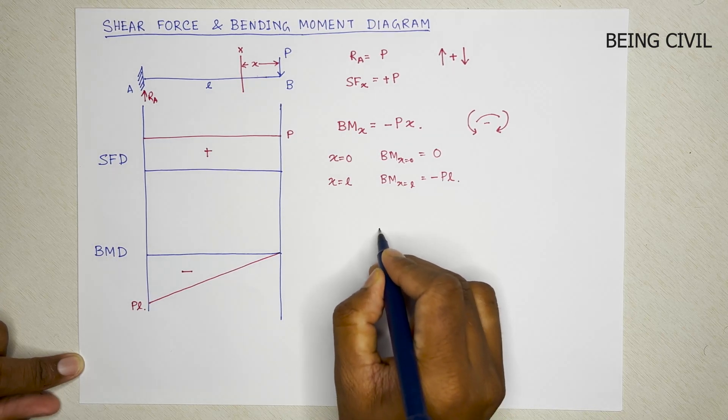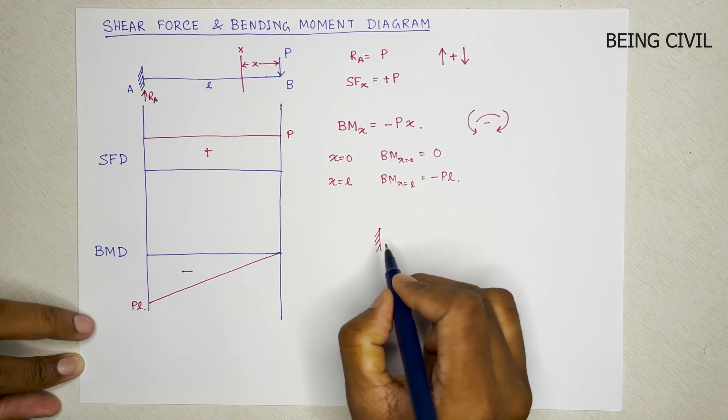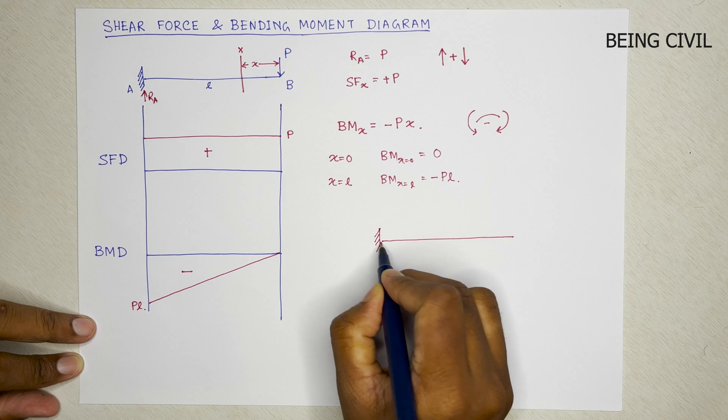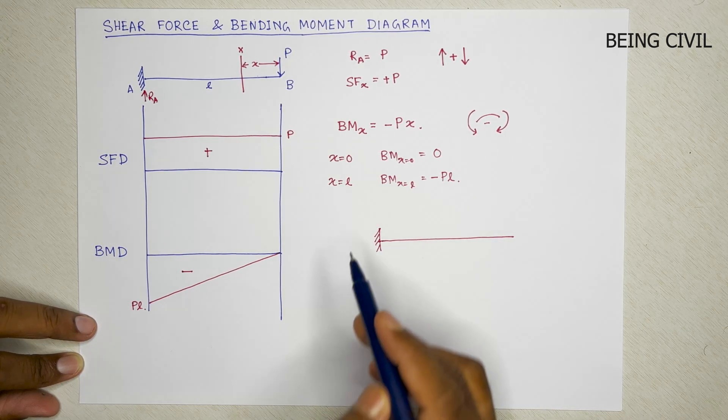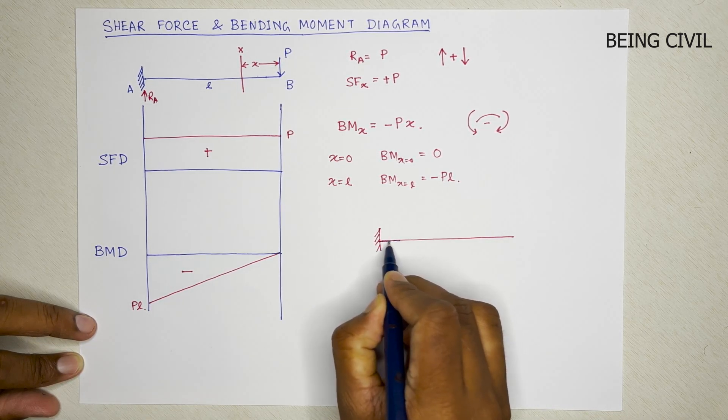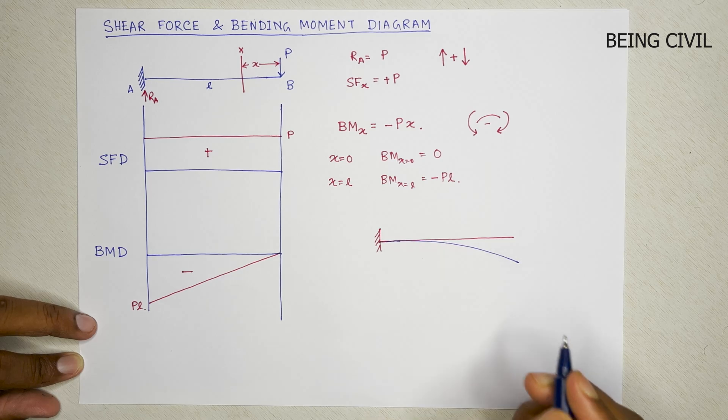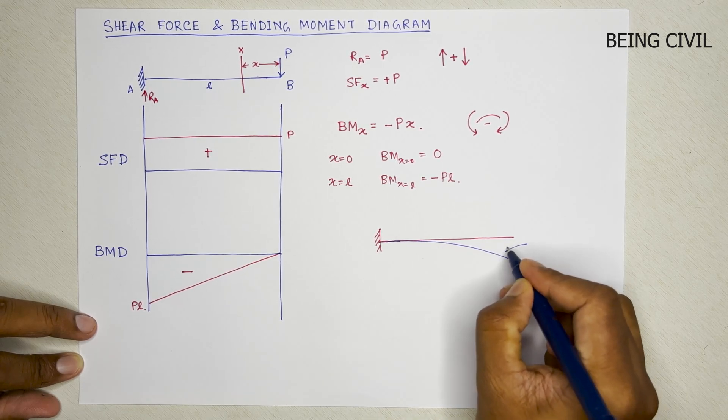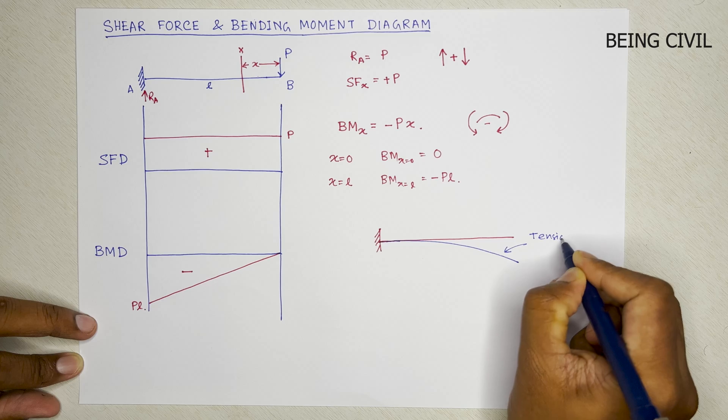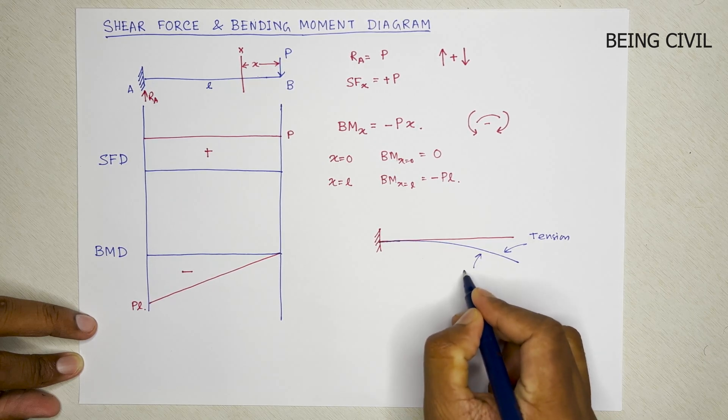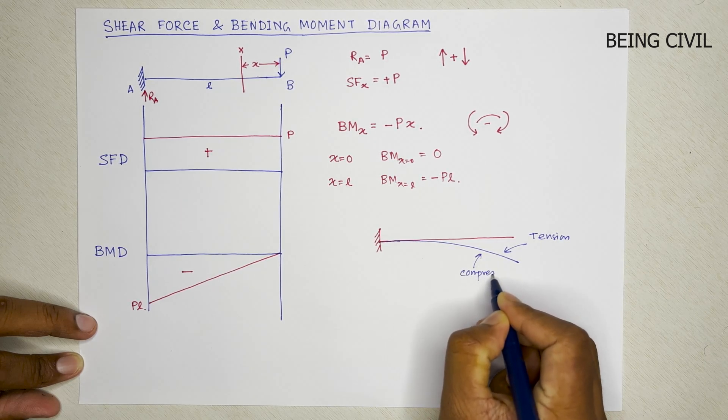And the deflected shape of this beam is like this. Top side is tension and bottom side is compression.